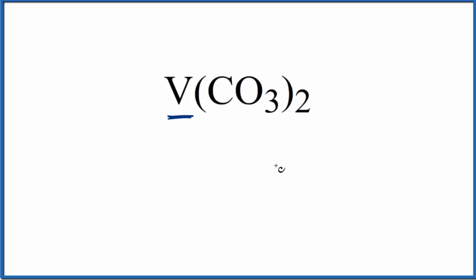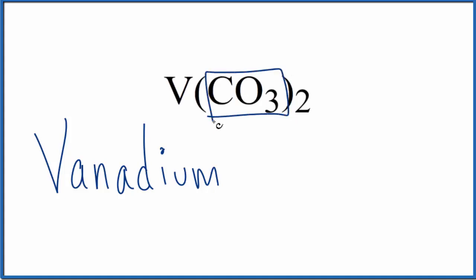The first thing we'll do is write the name for the metal, vanadium. And then we're going to write the name for the polyatomic ion, the CO₃. You've either memorized that CO₃ is the carbonate ion, lowercase c, or if you're allowed, you could look this up on a table of polyatomic ions.